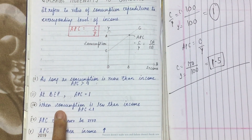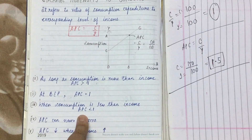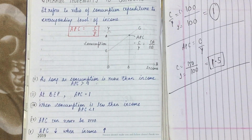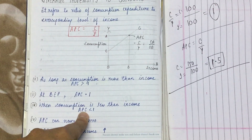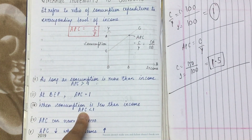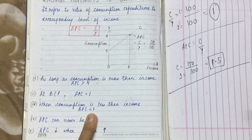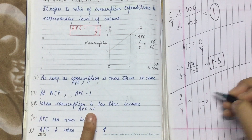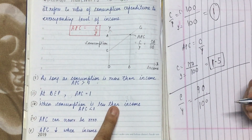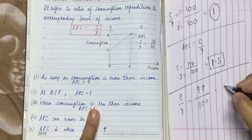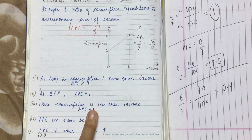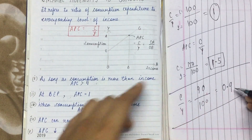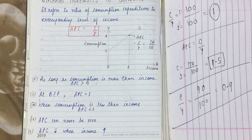Third property: when consumption is less than income, APC is less than 1. If your income is more than your consumption, APC falls below 1. Let's solve it numerically: APC = C/Y. Income is 100 rupees and consumption is 90 rupees. Solving: 90/100 = 0.9. So APC is less than 1 — this is also proved.